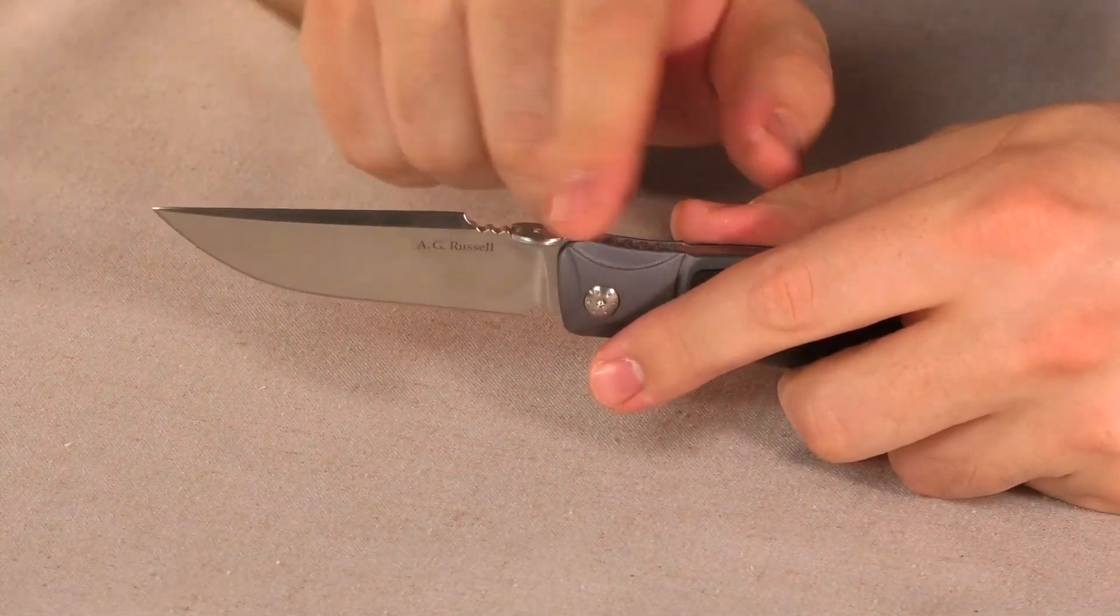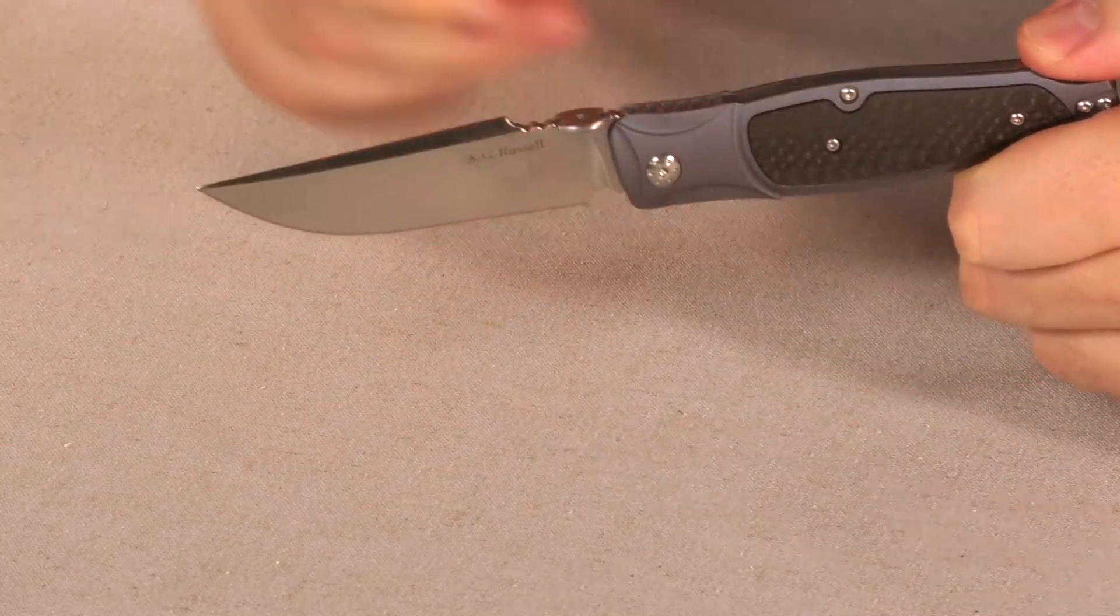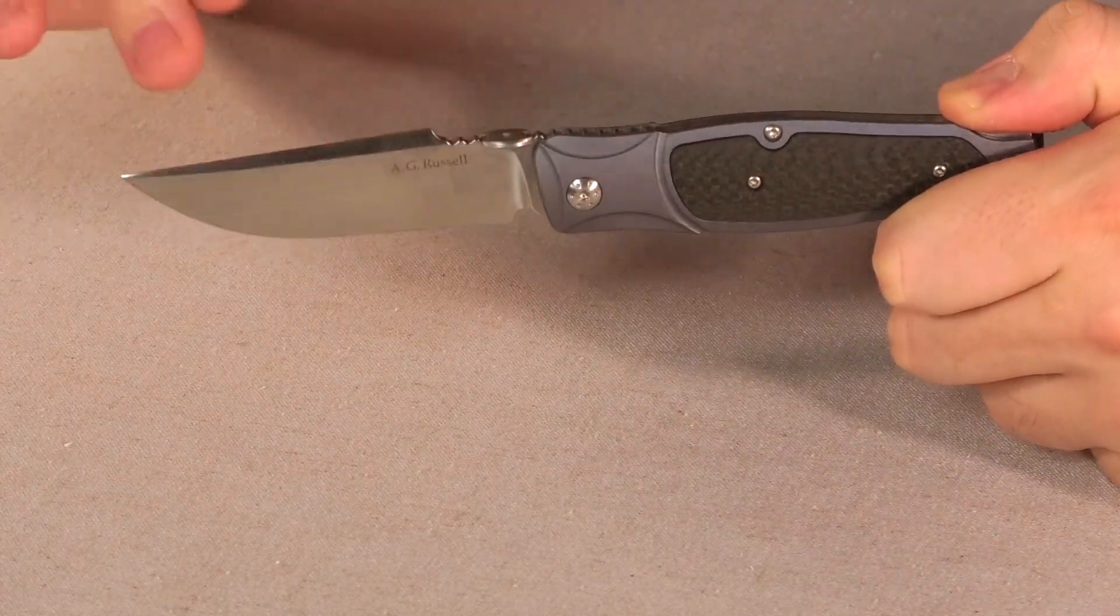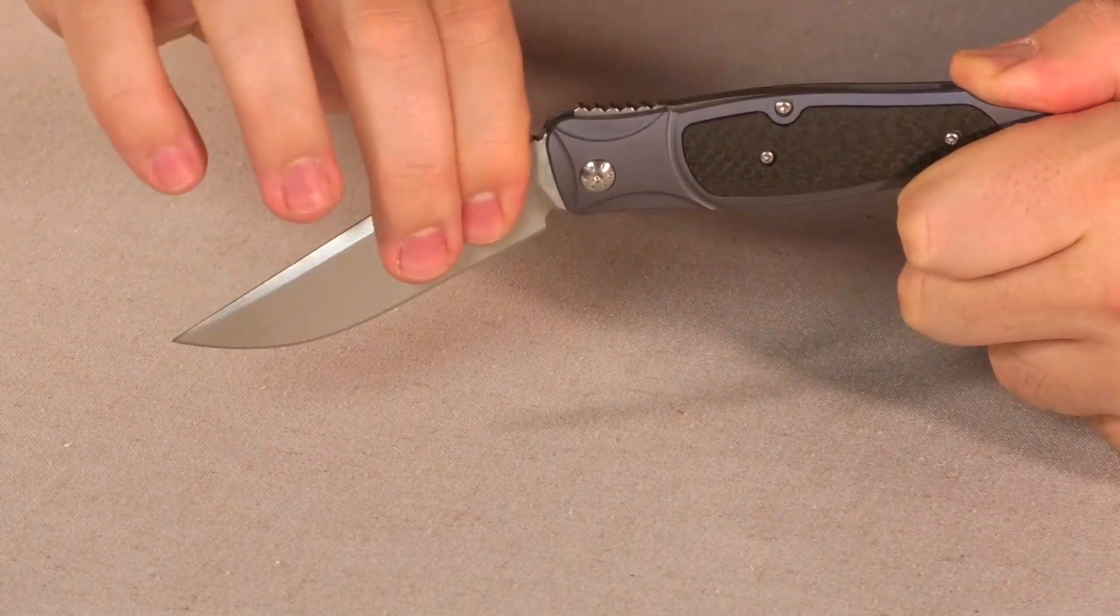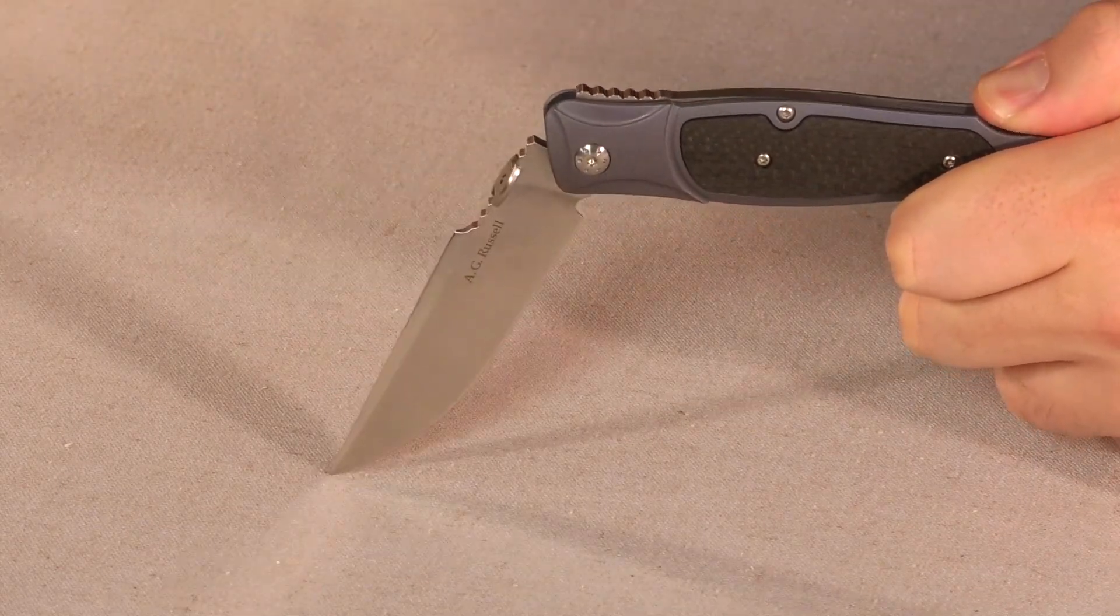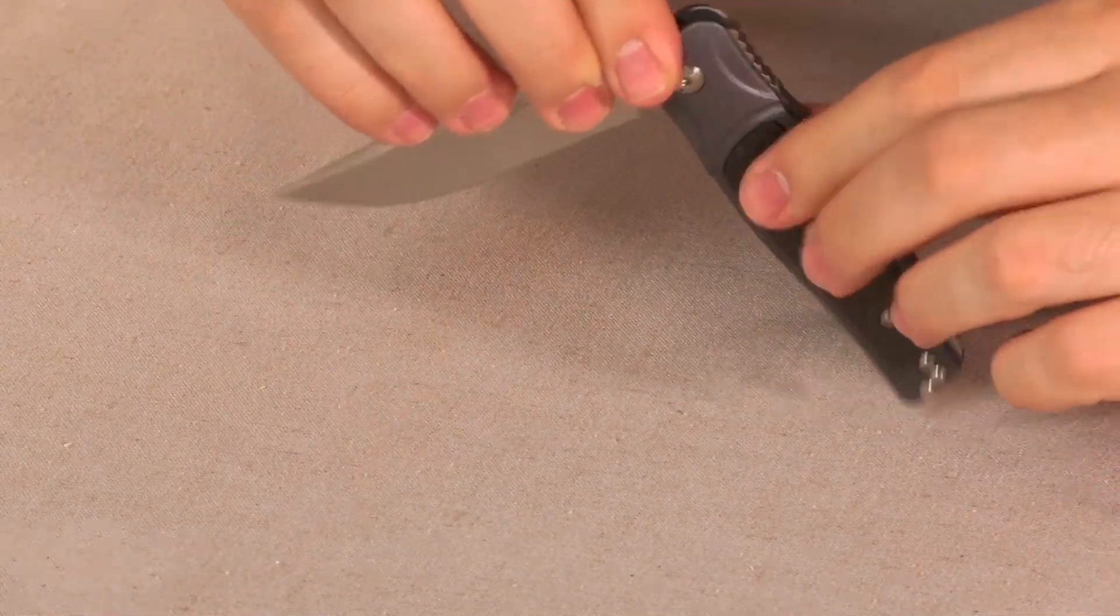Then we have a thumb disc for opening. Very, very smooth. I mean I got this one to be drop shutting. I wouldn't do it with a lock back. You can see, yeah, you don't want your fingers there.